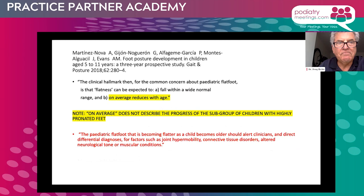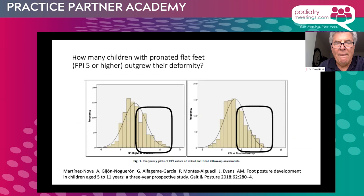The Foot Posture Index does reduce with age in a large segment of the growing children population. But there's a subgroup of patients with highly pronated feet, and it's those patients I'm interested in. These researchers warn that patients with joint hypermobility, connective tissue disorders, altered neurologic tone, or other muscular conditions should be monitored by clinicians. Looking at the frequency plots, patients from five to ten or higher at age ten have pronated feet that have not improved to a neutral range. During this three-year period, there remains a significant number with a score of plus five or higher. Some may be symptomatic, some asymptomatic, but I'm interested in what these patients look like when they become adults.